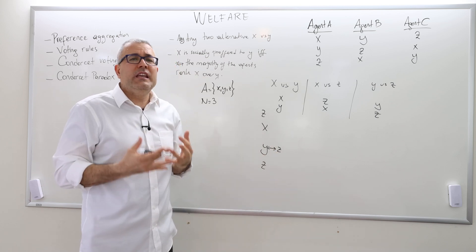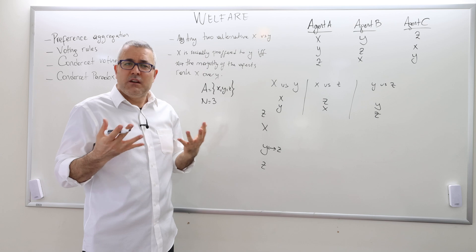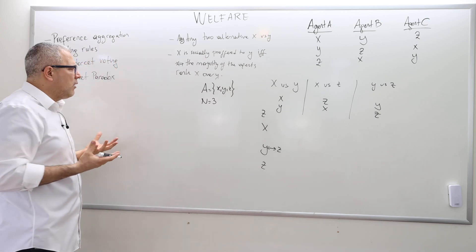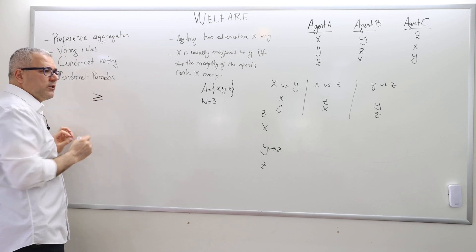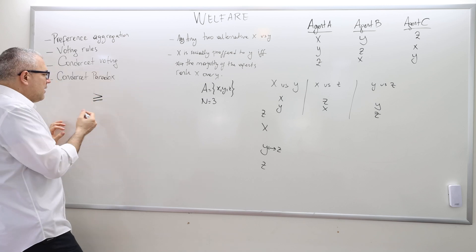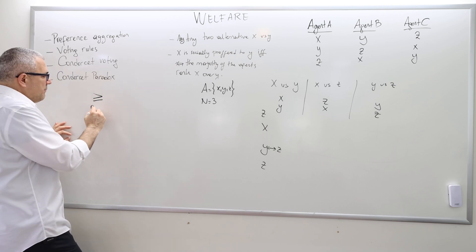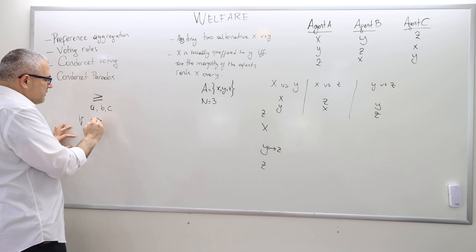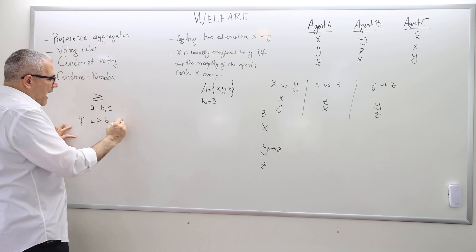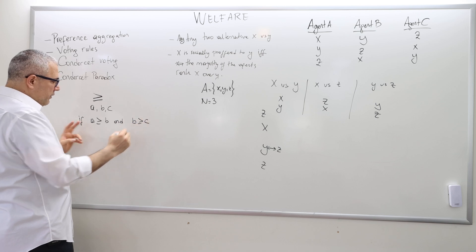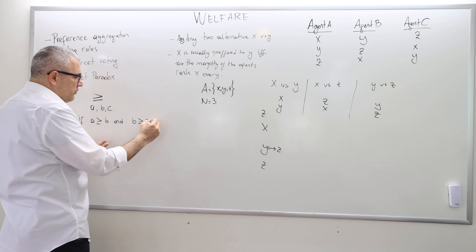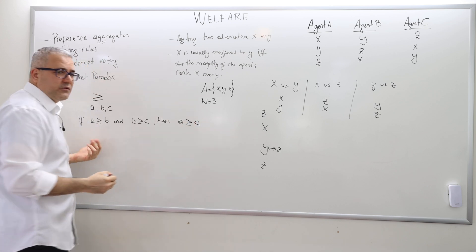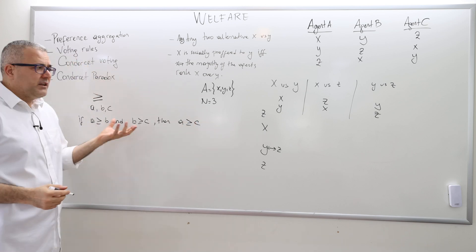Here, what we're having is what we call intransitive preferences. Remember, binary relations, many binary relations that we know of in mathematics, for example, greater than or equal to is a transitive relationship. It's like if A, B, C are three real numbers, and if A is greater than or equal to B and B is greater than or equal to C, then automatically this implies that A is greater than or equal to C. So this is what we mean by transitivity.